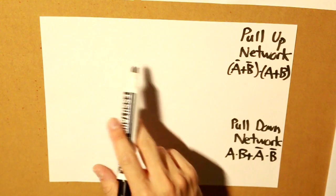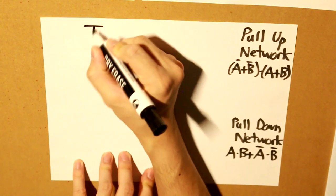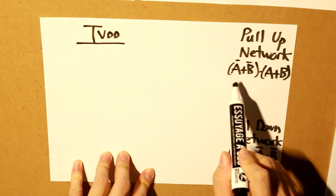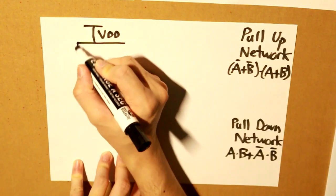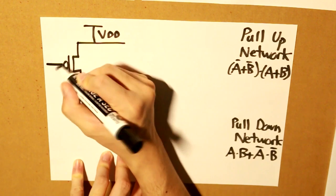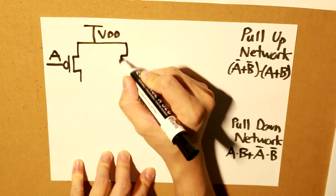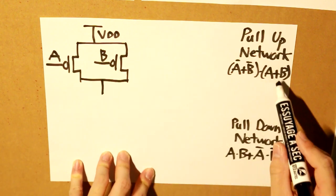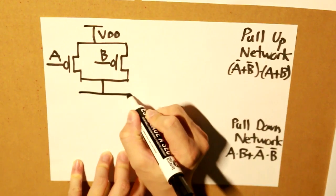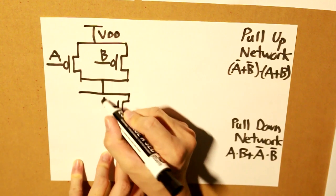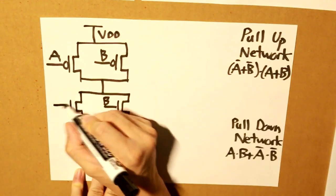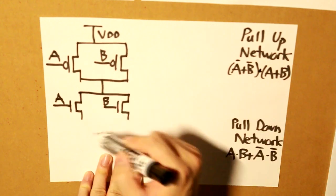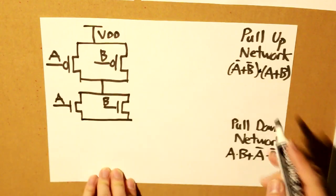So let's first draw our pull-up network circuit. So we have VDD, and right here I'm going to draw this circuit. A right here. And then let's draw our circuit here, A plus B. And then since there's an AND state here, we're going to connect them in series like this. So there's our pull-up network.